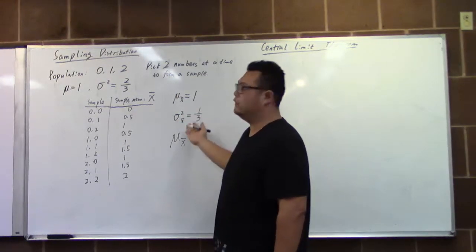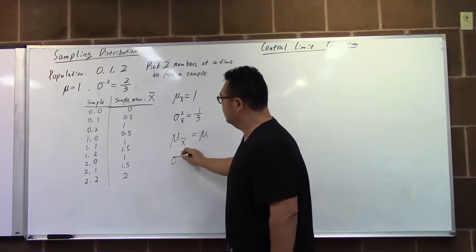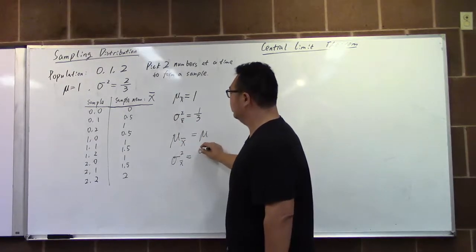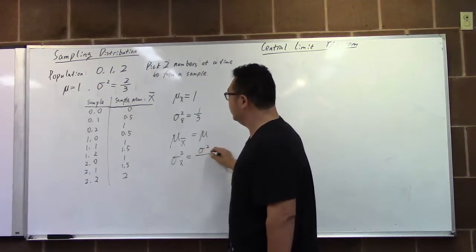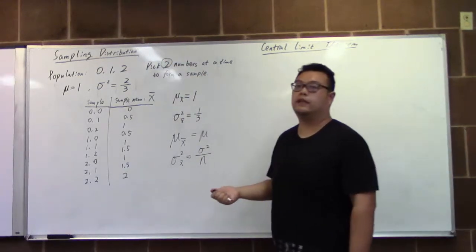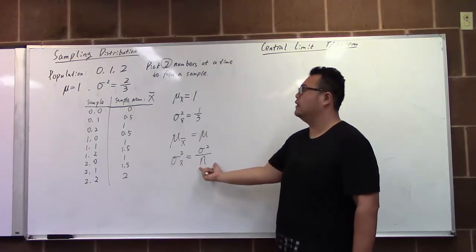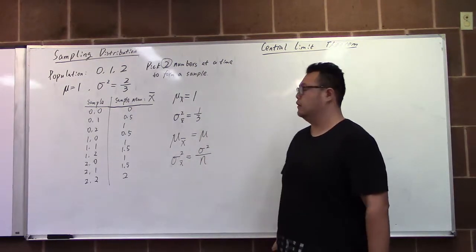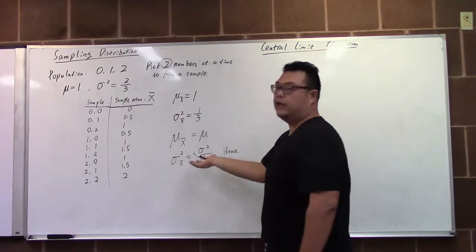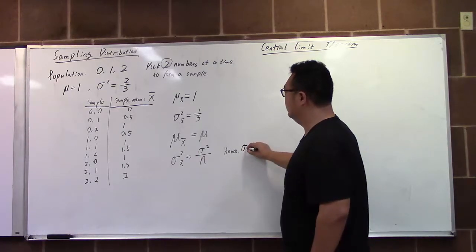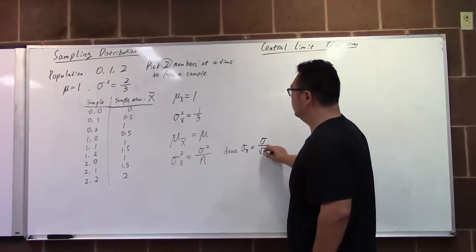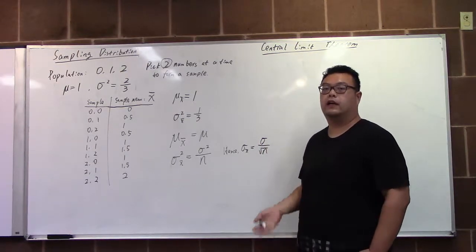And the variance of the sample mean is equal to the variance of the original population divided by the size we have. In this case we have 2 here as the sample size. Then in general we just divide it by n, the size of the distribution. And hence the sample standard deviation of the sample mean will be just the population standard deviation divided by square root of n.